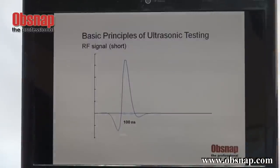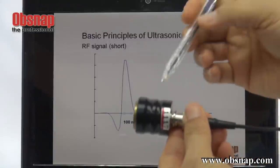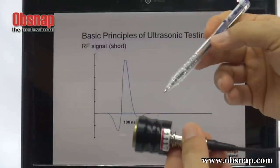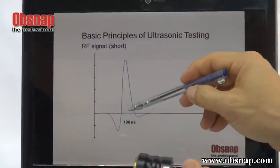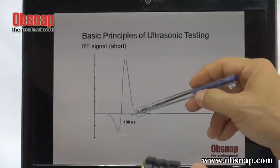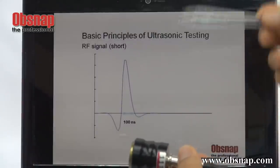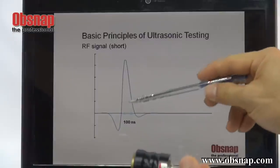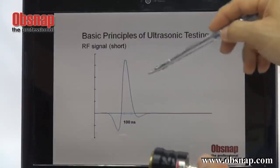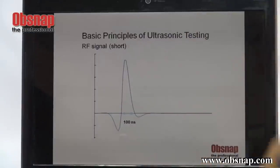How is the sound wave actually generated? It is generated in terms of pulses, and how short is the pulse? It's actually in terms of 100 nanoseconds. The controller will then control this pulse to be repeatedly generated.